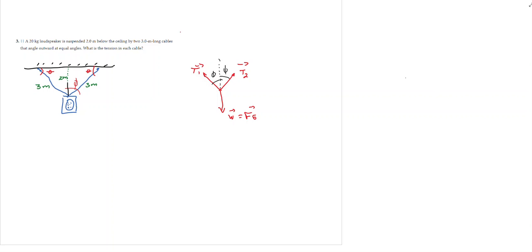In the exercise we are solving here, they say that it is a 20 kilograms loudspeaker, but it is suspended 2.0 meters below the ceiling. So basically what they give us here is this dimension — it is 2.0 meters — and it is the distance from the loudspeaker to the ceiling. They say also that it is suspended by 3 meters long cables.